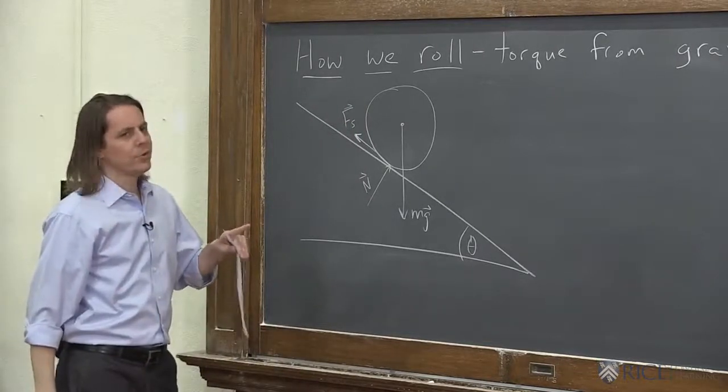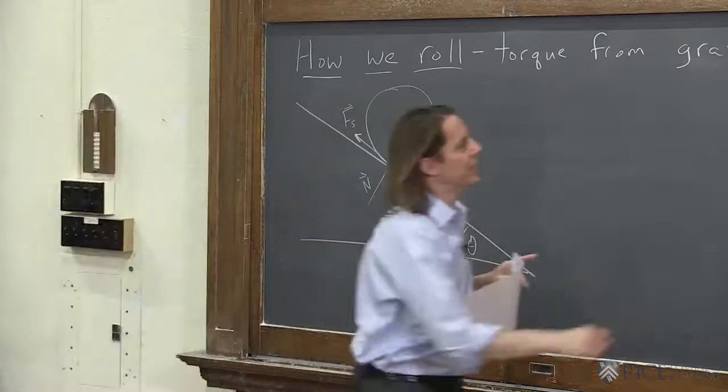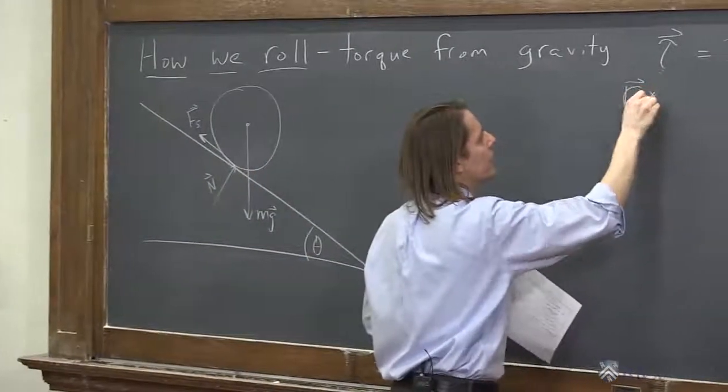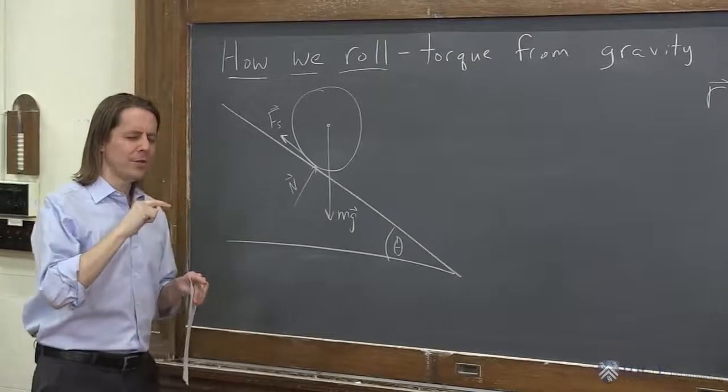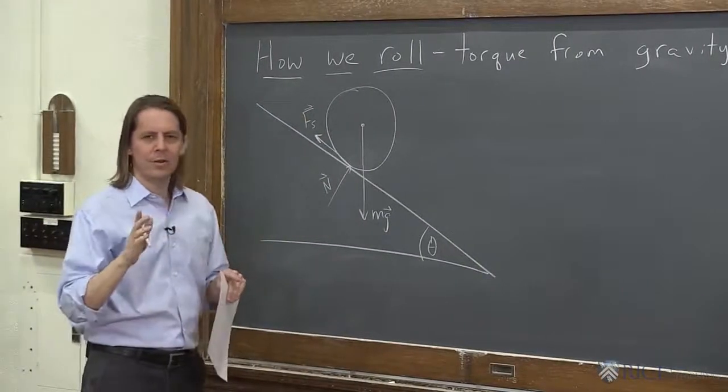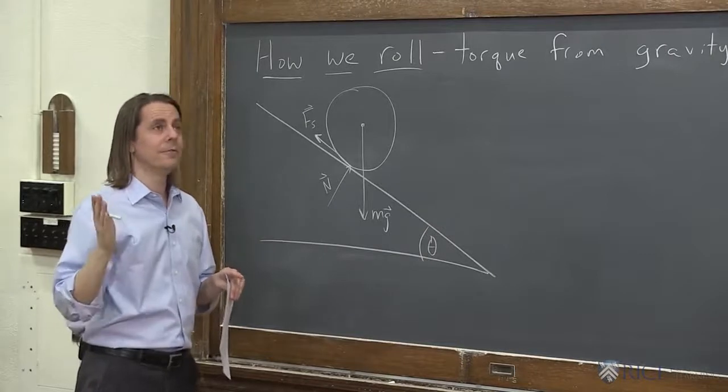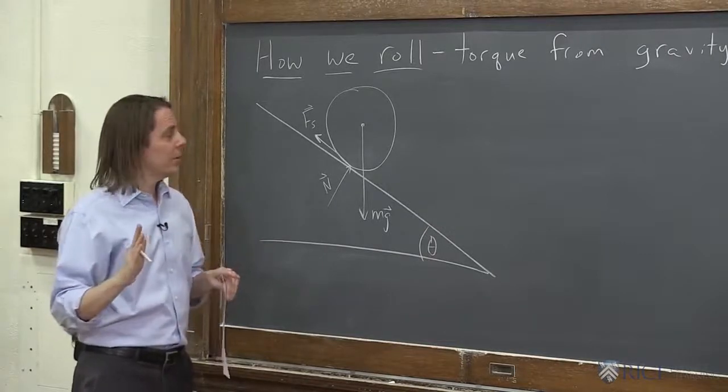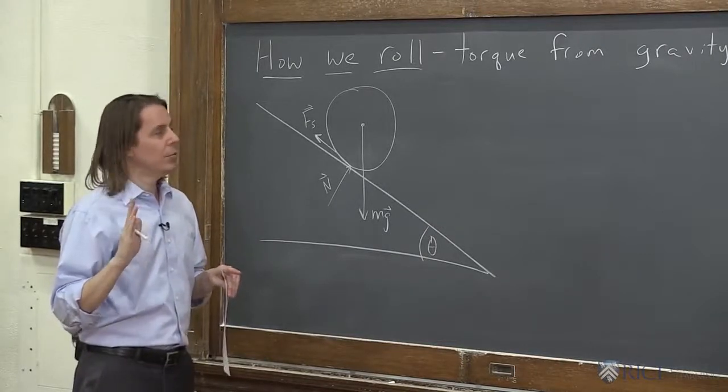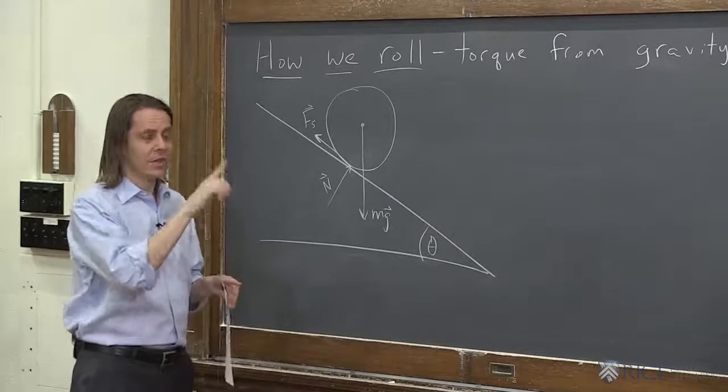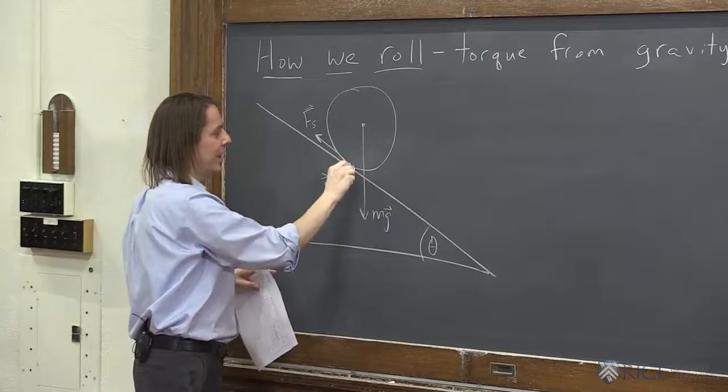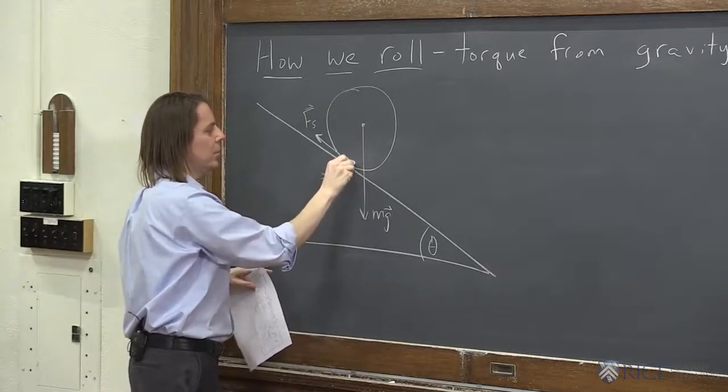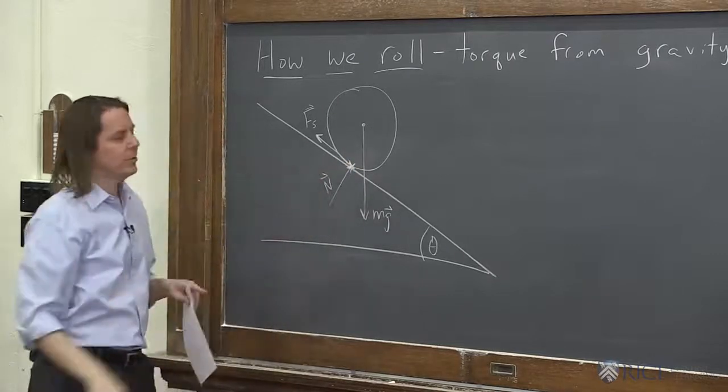And we're going to talk about it later. But right now, I'm just going to tell you there's a friction force back, a static friction force, because the contact point between the cylinder and the ramp isn't moving. That's a case of static friction. So I'll write this Fs. Those are the three forces. Now, which ones create a torque?